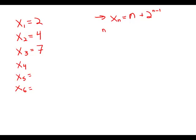I'm going to plug in n equals 3. So theoretically, according to this formula, when n equals 3, x sub 3, the third x, should equal 3 plus 2 to the 3 minus 1.